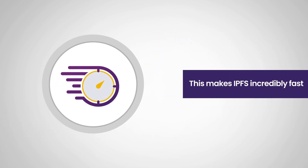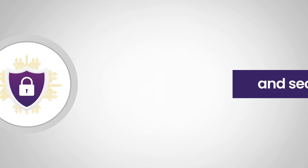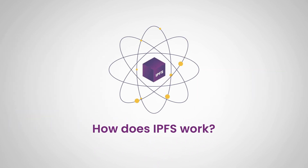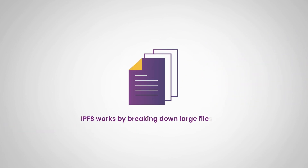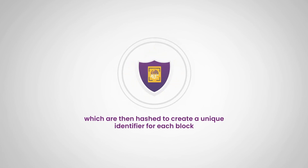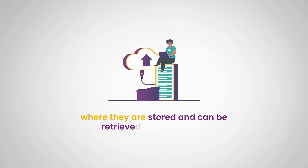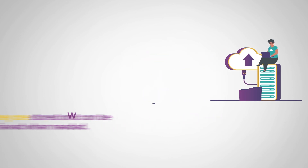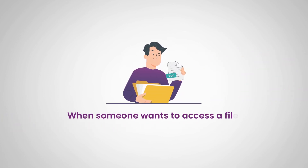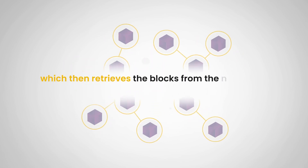This makes IPFS incredibly fast, resilient, and secure. How does IPFS work? IPFS works by breaking down large files into smaller pieces called blocks, which are then hashed to create a unique identifier for each block. These blocks are then distributed across the network of nodes where they are stored and can be retrieved when needed. When someone wants to access a file, they simply send a request to the network, which then retrieves the blocks from the nodes.